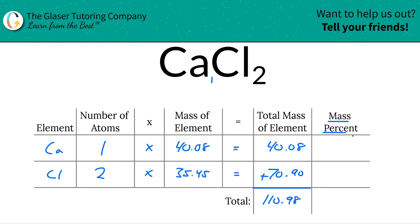So to find the mass percent of each particular element of the compound, we're going to take the total mass of calcium, which was 40.08, and we're going to divide it by the total mass of the entire compound, which was 110.98, and then multiply that by 100. That's a simple percent formula: part over whole times 100.